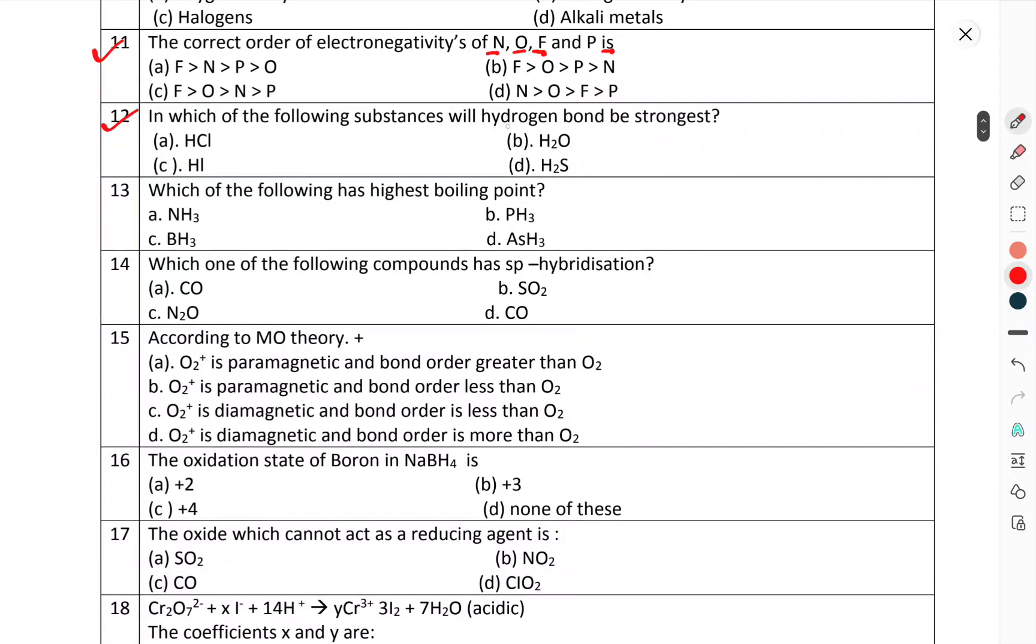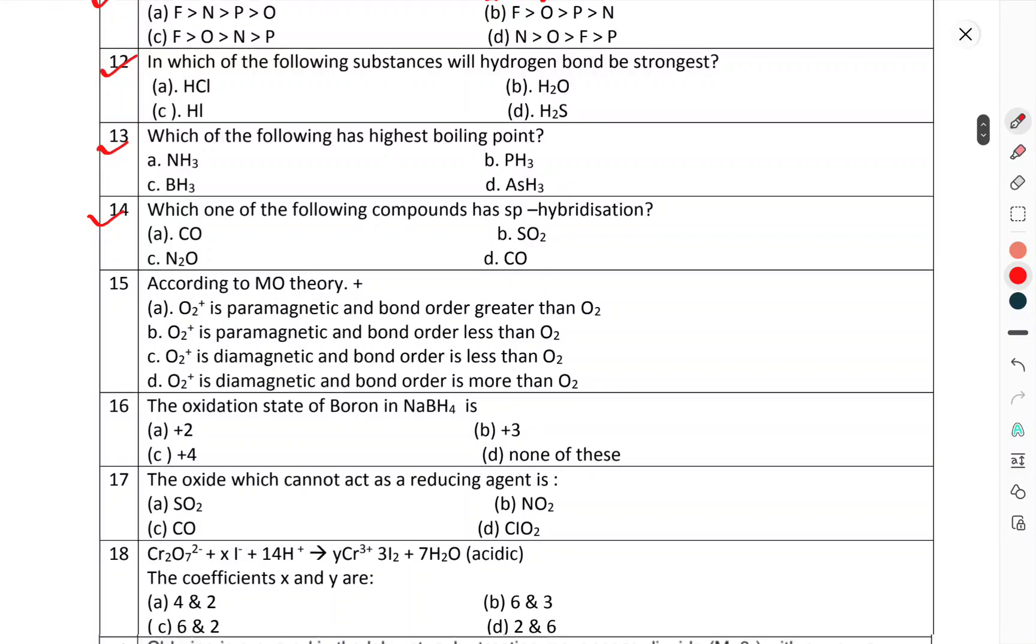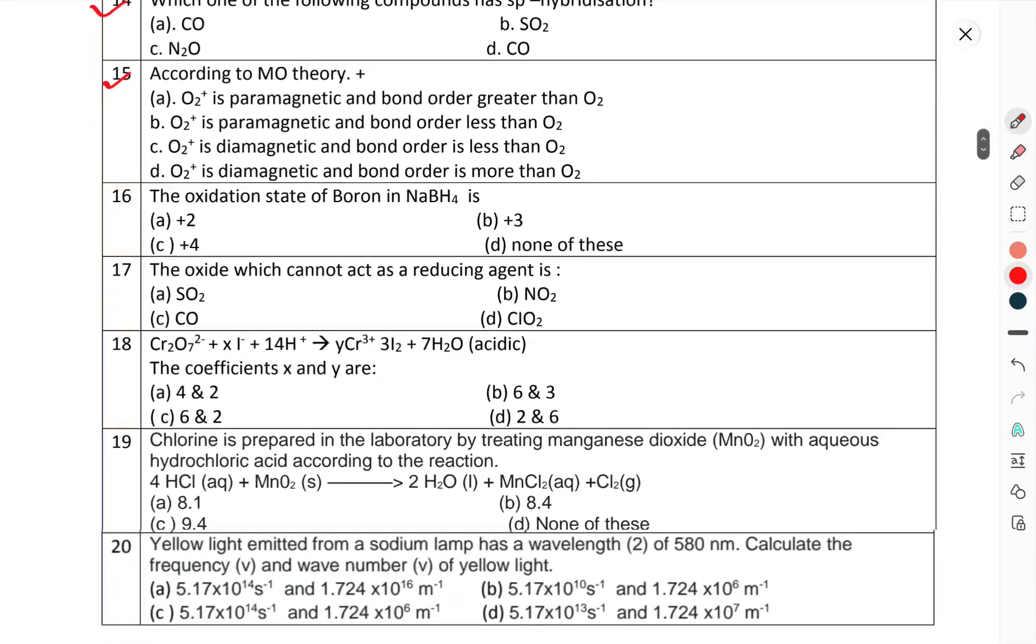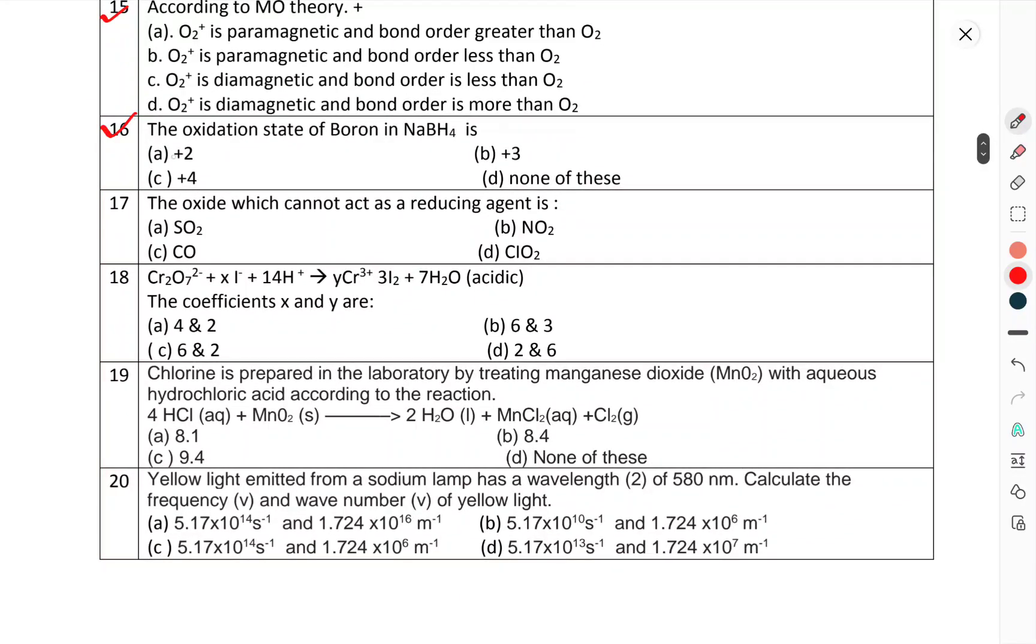Question number 12: In which of the following substances will hydrogen bond be strongest? Question number 13: Which of the following has the highest boiling point? Question number 14: Which one of the following compounds has sp hybridization? Question number 15: According to molecular orbital theory, which option is correct?